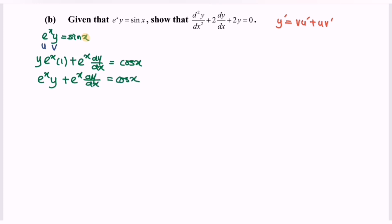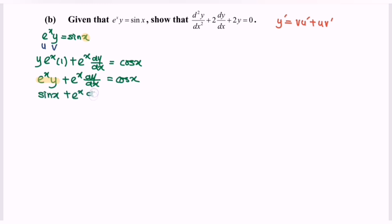Kindly observe that e^x multiplied with y is sin(x). So, substitute this back: sin(x) plus e^x·(dy/dx) equals cos(x).